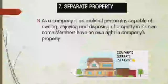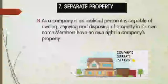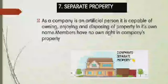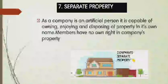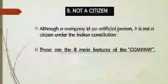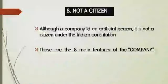The next one is separate property. Members join together and form a company. If they buy assets, the assets will be registered under the name of the company only. After registration, a company becomes a separate person, so it has separate property. The property of the company is not the property of its members — it belongs to the company alone.